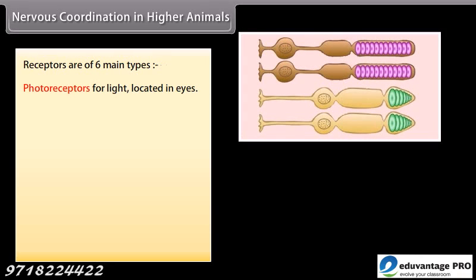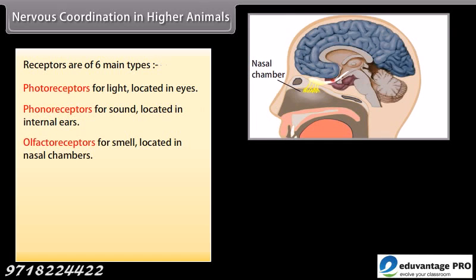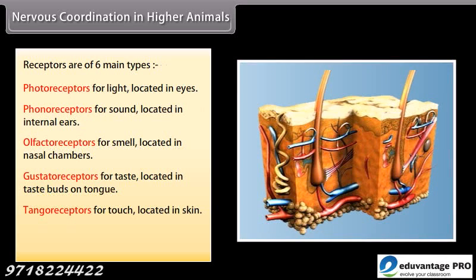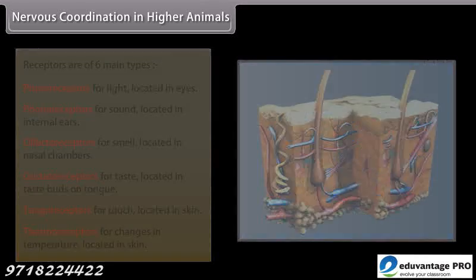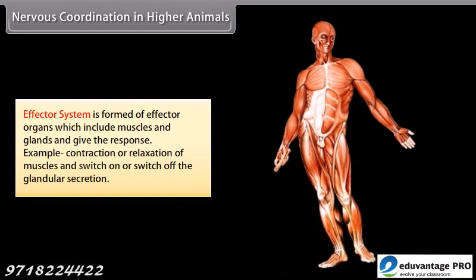Photoreceptors for light are located in eyes. Phonoreceptors for sound are located in internal ears. Olfactory receptors for smell are located in nasal chambers. Gustatory receptors for taste are located in taste buds on the tongue. Tangoreceptors for touch are located in skin. Thermoreceptors for changes in temperature are located in skin. The nervous system analyzes sensory nerve impulses and initiates appropriate motor nerve impulses carried to the effector organ by motor nerves. The effector system includes muscles and glands, which give the response — contraction or relaxation of muscles and switching on or off of glandular secretion.